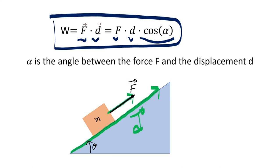Then look to where your force is going — the direction of your force. In this case, we see F and D are in the same direction, parallel to each other, which means alpha is zero. So if alpha is zero, cosine of alpha is one, and the work will be just F times D, because cosine of alpha is one — F times D times one is just F times D.